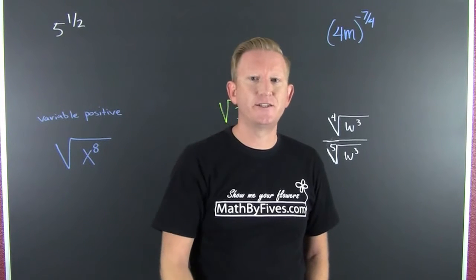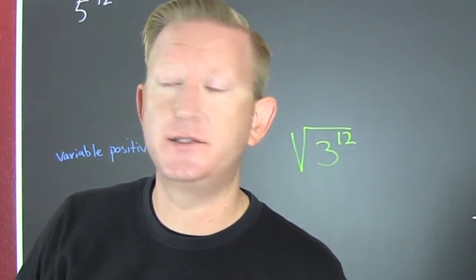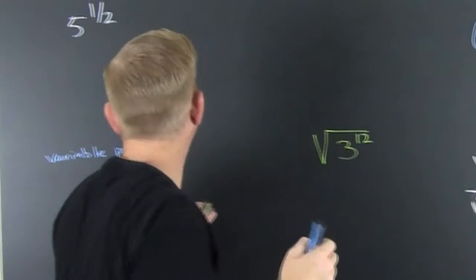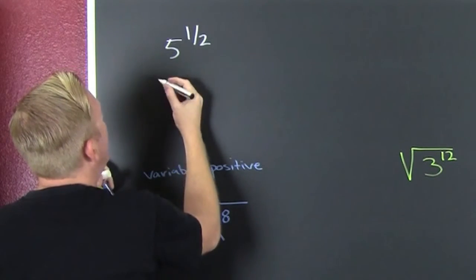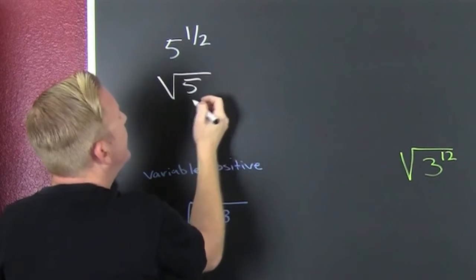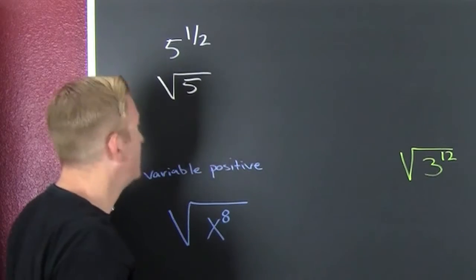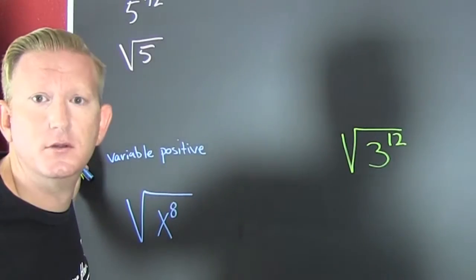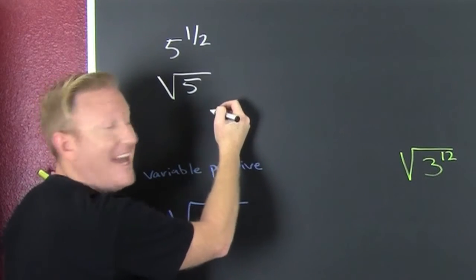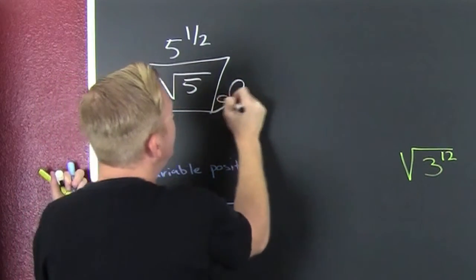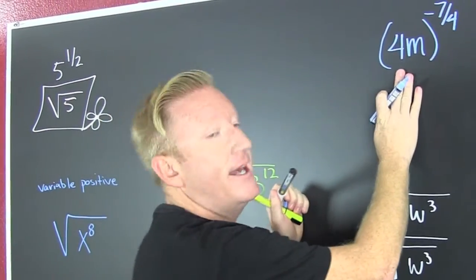We're looking at more expressions with rational exponents — simplifying or not. Looking at this one, I can see that's the square root of 5. I only have one 5, so I can't go any further because there aren't any pairs.